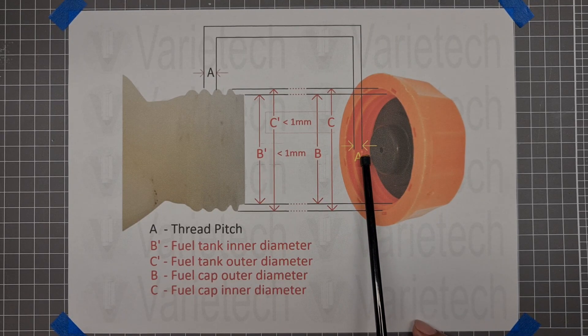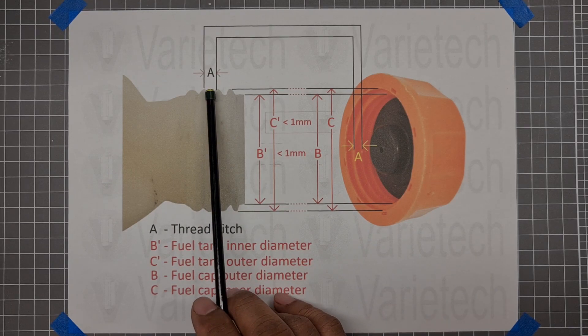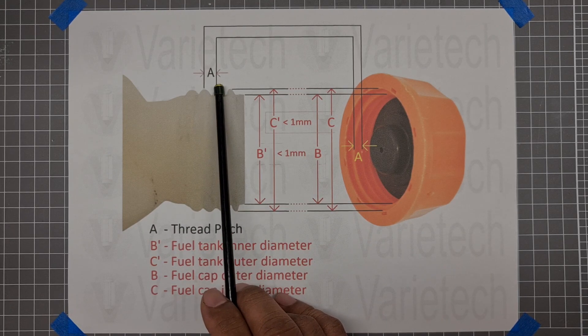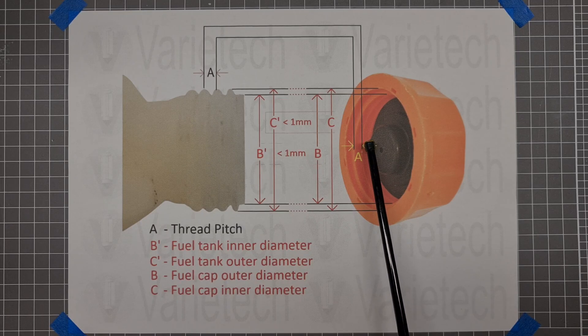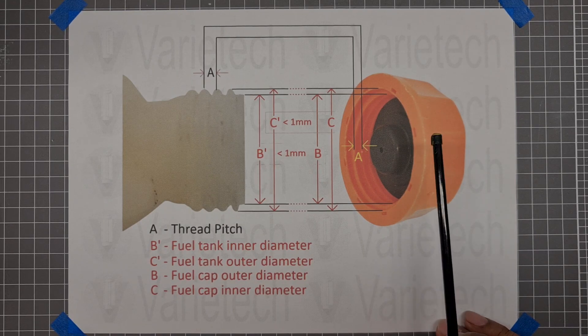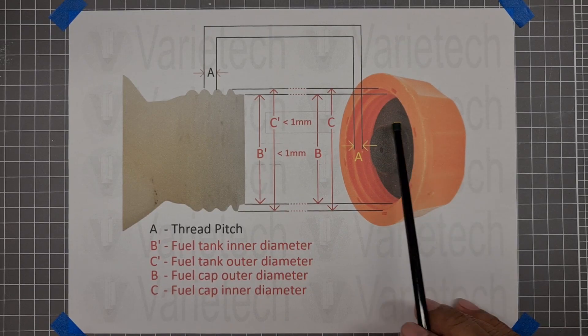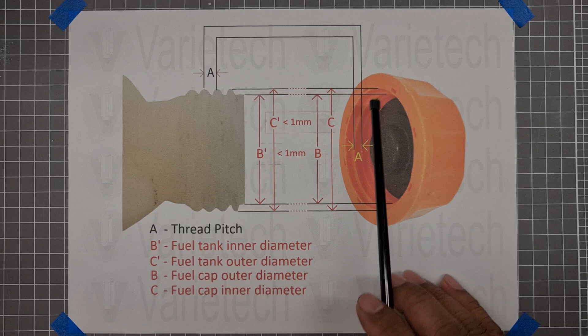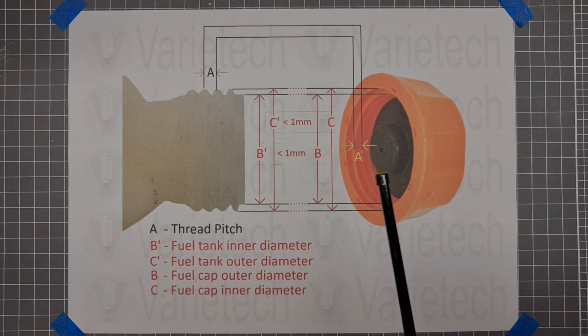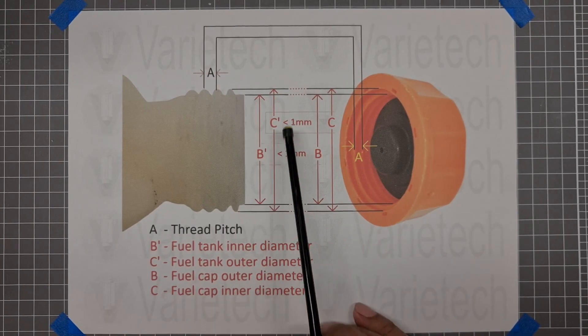So when you provide me the measurement here, I can verify that I have the same measurement on the fuel cap. Normally some of our fuel caps listed on eBay or our product store, I provided some of the measurements for A and B and C. Now we have B prime and C prime.